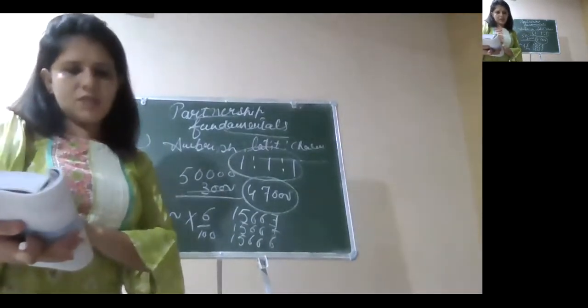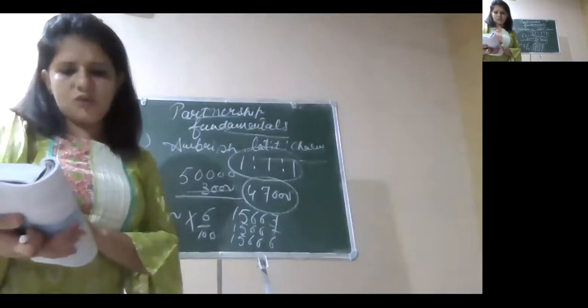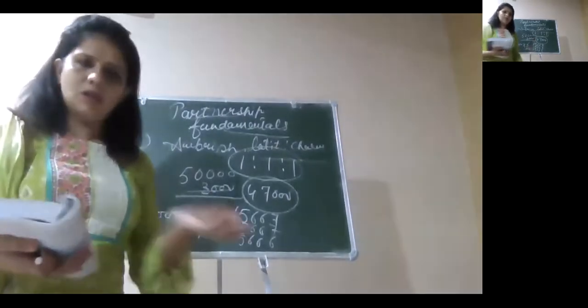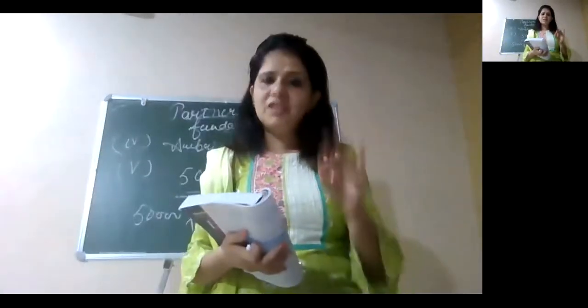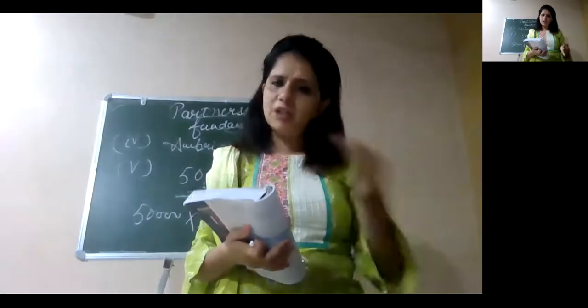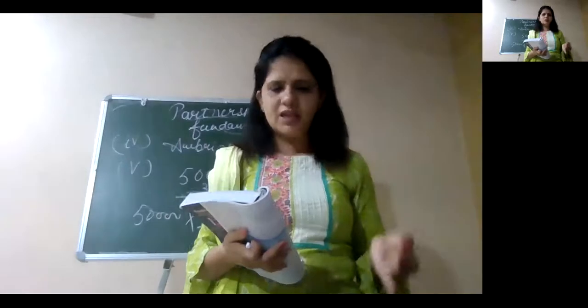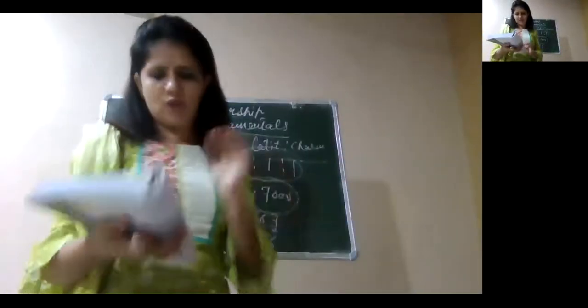Then, sixth point padhiye. Lalit wants to introduce his son Indar as partner. Charu objects to his proposal. So whenever a new partner is being admitted and deed is silent over it, then we need the consent of each and every other partner. So if Charu has objected, his son Indar couldn't be admitted into the firm. So again, you have to write like that way.